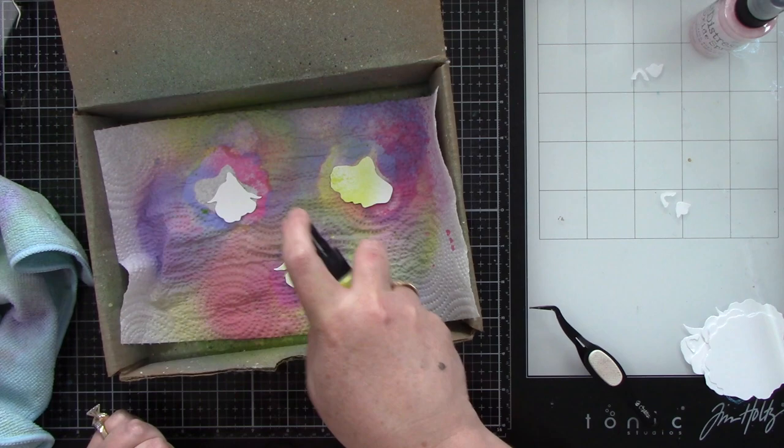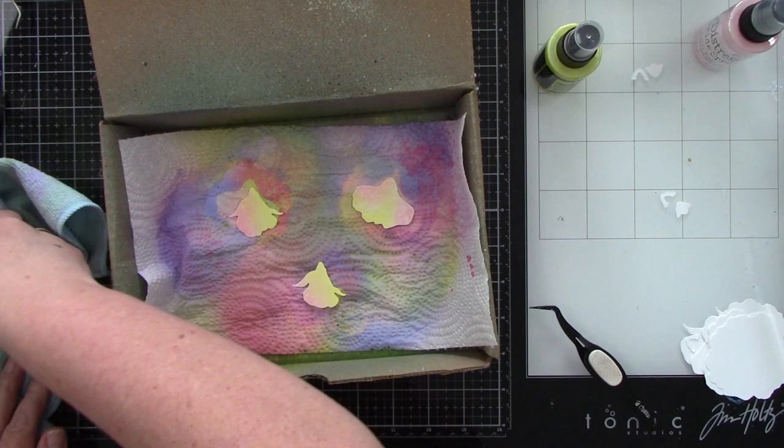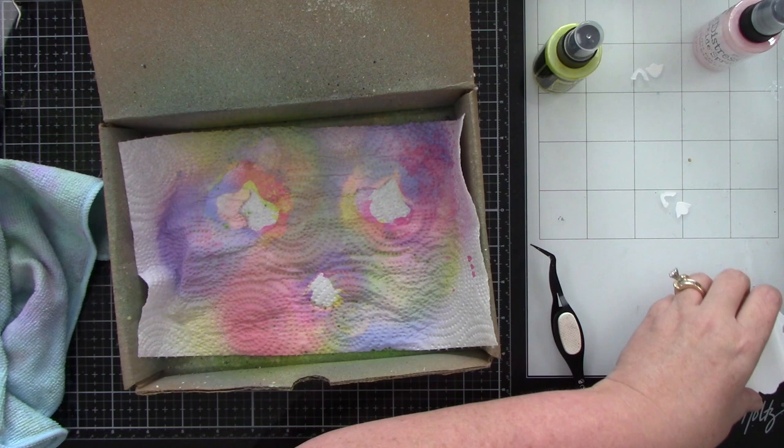This turned out a lot lighter than I had planned. So if you wanted something darker, I would say instead of the Spun Sugar, use the Kitsch Flamingo or the Picked Raspberry. So let's finish with these smaller little pieces. Two of those are the bud and one of them still goes with that larger flower.